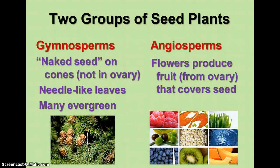The two groups of seed plants are gymnosperms and angiosperms. Gymnosperm means naked seed — the seed is found on cones, not in a protective ovary like in angiosperms. Gymnosperms generally have needle-like leaves and many are evergreens, including pine trees, fir trees, and cycads such as sago palms, which also produce cones. They range from smaller plants to very large ones.